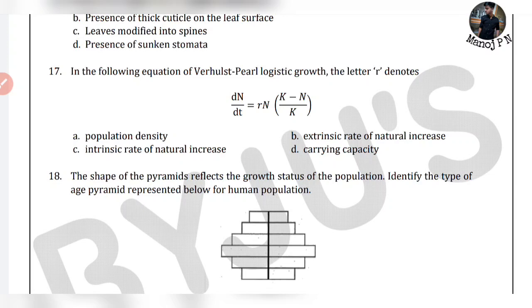In the Verhulst-Pearl logistic growth equation, the letter R — we have N, K, and R. N is population density at time T, K is the maximum number of organisms that can be supported by the habitat without environmental degradation, called carrying capacity. R is the intrinsic rate of natural increase — that is, number of births minus number of deaths. That is option C.